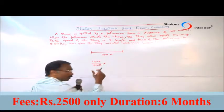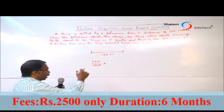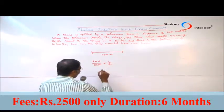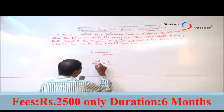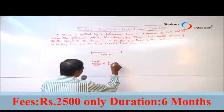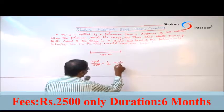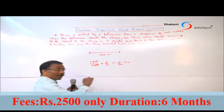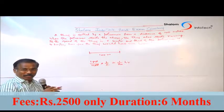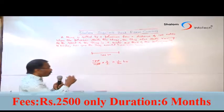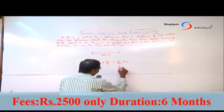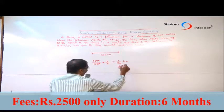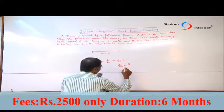Distance divided by speed. Divide it by 2 — that is, 1 by 2. Simplified, this is 1 by 20. So 1 by 20 hour is the time to overtake. This 1 by 20 hour is the time for the policeman, not the thief. How long does the thief travel? At 8 kilometers per hour.